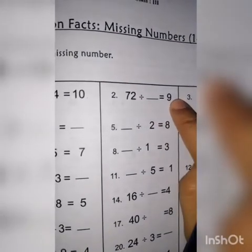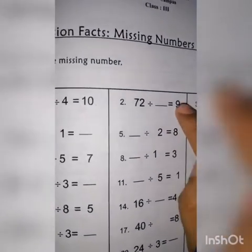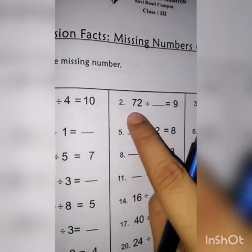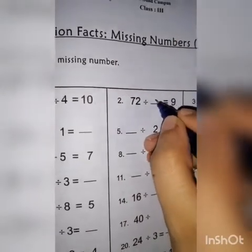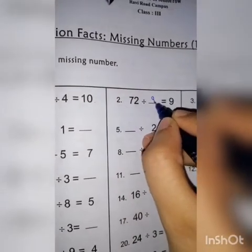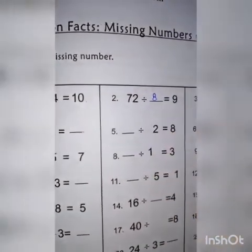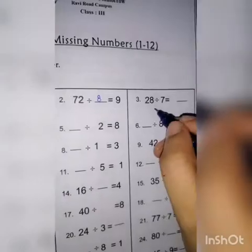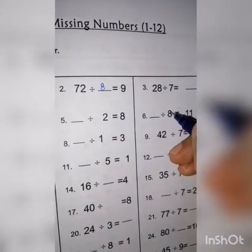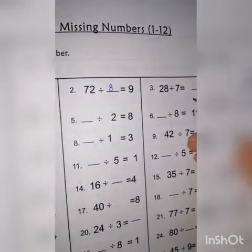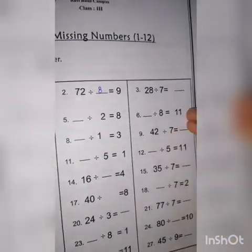اب جیسے 72 divided by dash equal to 9 — یہ 9 ادھر multiply ہے، ادھر آ کے میں divide کر دوں گی۔ 72 کو جب 9 پہ divide کیا جائے گا تو کیا آئے گا؟ 8۔ اب ہے 28 divided by 7۔